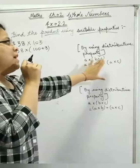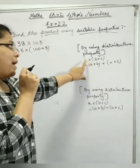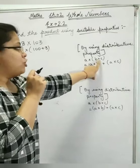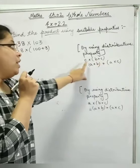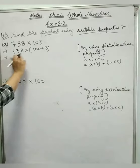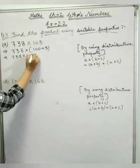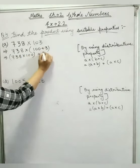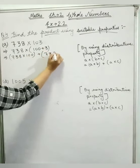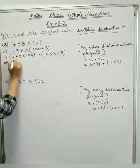So this is distributive property: a into (b+c) equals a into b plus a into c. We multiply by a. So let's apply it here: 738 into 100 plus 738 into 3.